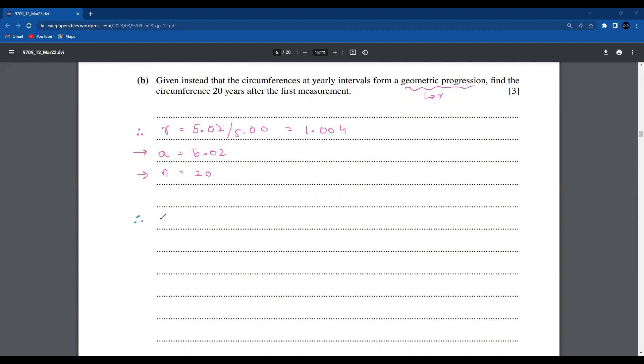Therefore, the nth term of GP is given by Tn equals a times r to the power of n minus 1.